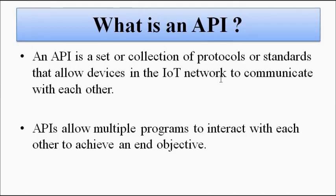The waiter acts as an interface — the connecting link, the mode of interaction between us and the chef in the kitchen. Since we cannot go directly into the kitchen, we place our order to the chef through the waiter. So the waiter acts as an Application Program Interface between two programs: us and the chef.